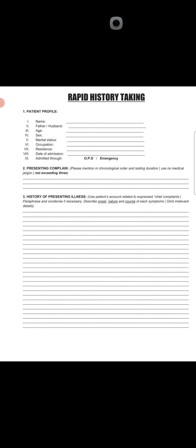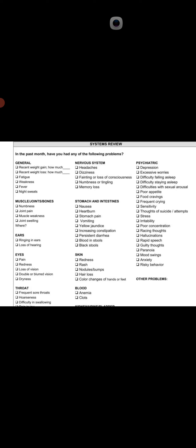The first step is the patient profile, second is the presenting complaint, third is the history of presenting illness, fourth is patient health history, fifth is treatment history, sixth is family history, seventh is personal history, eighth is socio-economic history, ninth is systematic review, and the tenth additional step is the introduction of doctor to patient and taking consent.